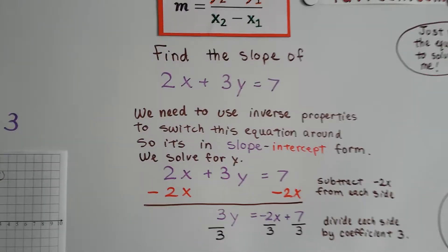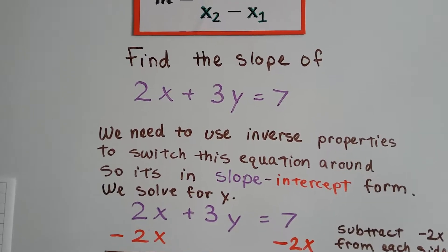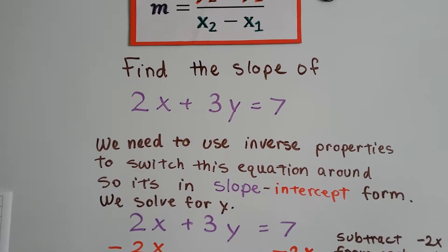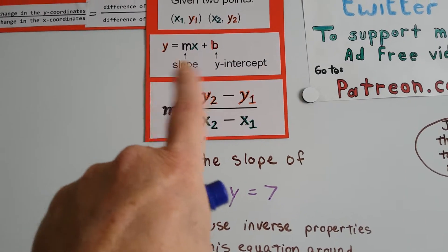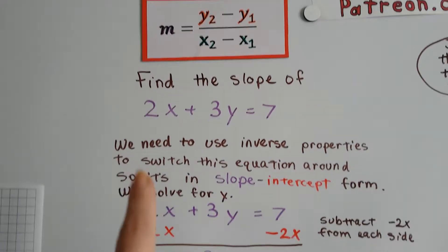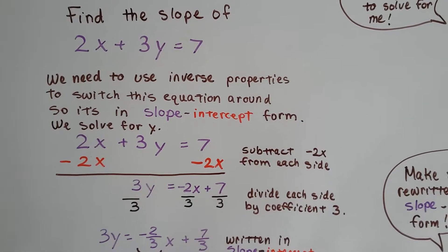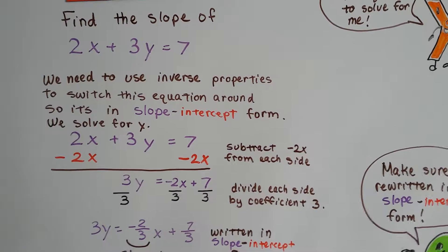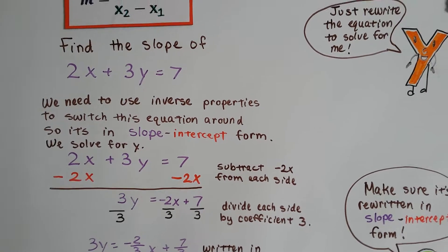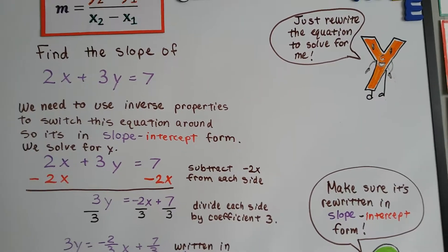Now, what happens when it says to find the slope of an equation like 2x plus 3y equals 7, and it's not in the slope-intercept form? Oh, now what do we do? Well, we need to use the inverse properties to switch this equation around so it's in slope-intercept form. So we solve for y. That's all. We just rewrite the equation to solve for it.